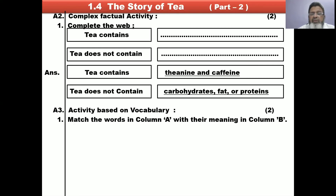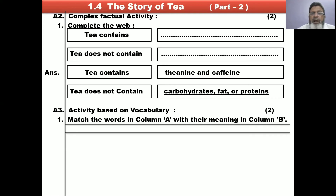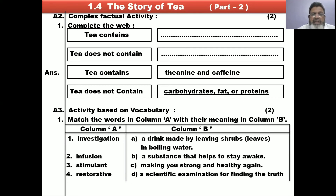Match the words in Column A with their meaning in Column B. We will make Column A and Column B. In Column A, there are 4 points: Investigation, Infusion, Stimulant, Restorative. In Column B, we will write the meanings. We will search first, then make the correct answer.